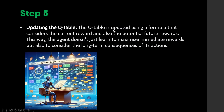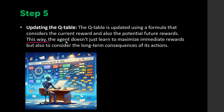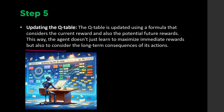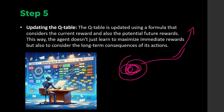Step five is updating the Q-table using a formula that considers both the current reward and potential future rewards. Pay attention here — considering future rewards is one of the key things that separates Q-Learning from many others. This way the agent doesn't just maximize immediate rewards; it also considers the long-term consequences of its actions, preventing it from getting stuck repeating the same behavior.